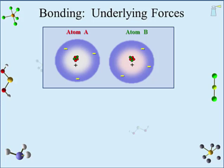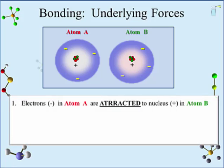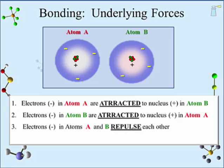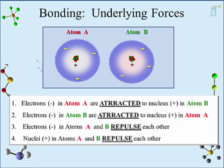There are four forces at work between these two atoms. First, the negatively charged electrons in atom A are attracted to the positively charged nucleus in atom B — negative and positive charges attract. Then the negatively charged electrons in atom B are attracted to the positively charged nucleus in atom A. Importantly, the negatively charged electrons of atom A and B repulse each other — negative and negative charges repel. And the positively charged nuclei in atoms A and B also repulse each other — positive and positive charges repel.